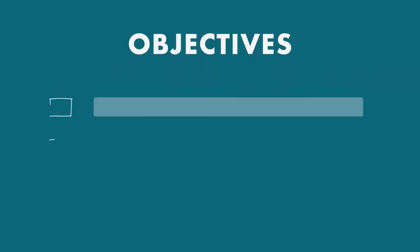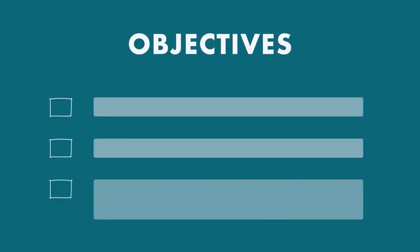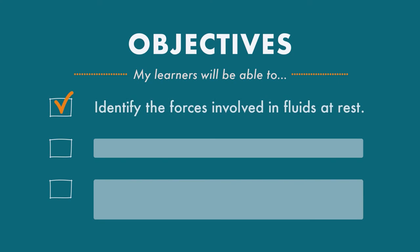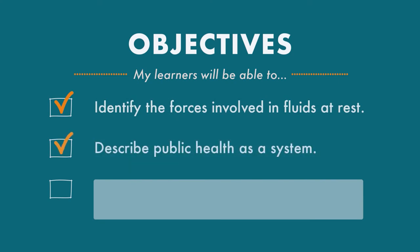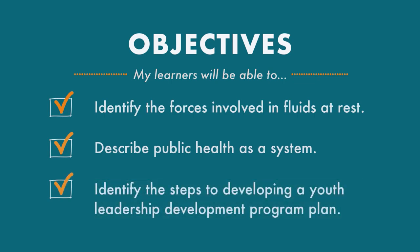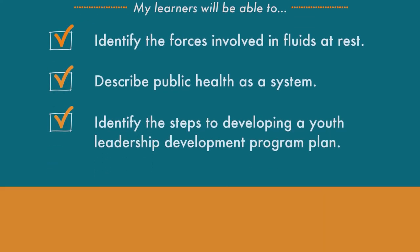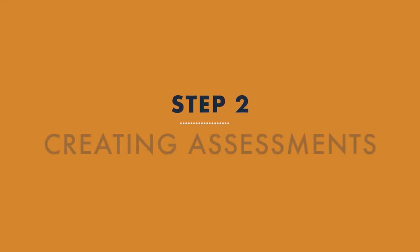Objectives are simple statements that define your vision for the course from the perspective of your learners: 'My learners will be able to identify the forces involved in fluids at rest,' 'describe public health as a system,' or 'identify the steps to developing a youth leadership development program plan.' When you have your objectives, you move on to the second step, which is creating assessments.